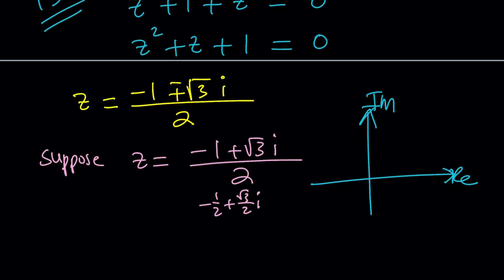They should also remind you of some special values. This is what it looks like. Negative 1 half is going to be about this much and root 3 over 2 is going to be like that. And we're in the second quadrant because our x value or a value is negative and b value is positive.